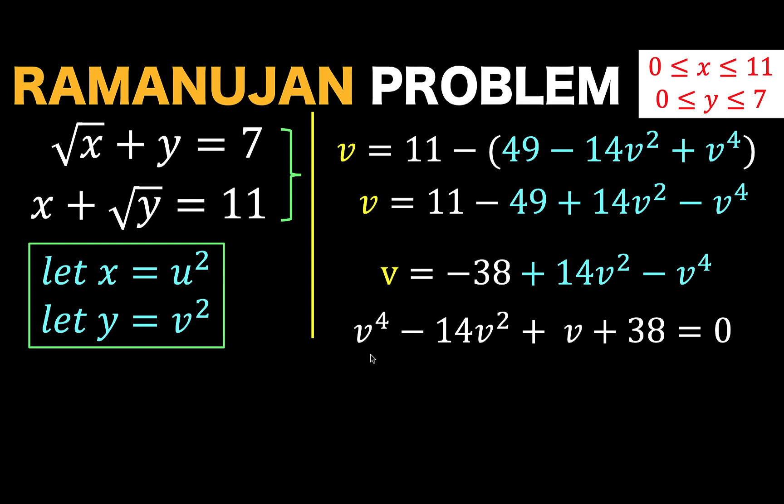Now, we are going to apply the technique called factoring by grouping. And we can do that by splitting this 14v squared and this v into something that will result to common factors with the rest of the other terms. This is what we are going to do. Split minus 14v squared into minus 4v squared and minus 10v squared. And split this 1v into 20v minus 19v. All the rest are just copied.